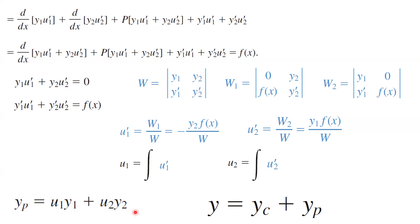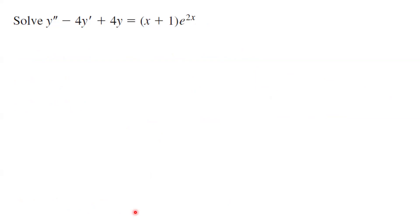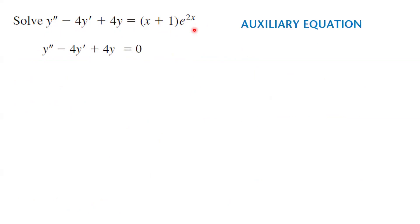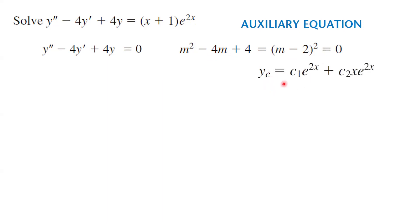So these are the steps we're going to take. Let's look at an example: the second derivative of y minus 4y prime plus 4y is equal to (x + 1)*e^(2x). Let us set the right-hand side equal to 0 and form the auxiliary equation, which is m squared minus 4m plus 4, or (m minus 2) squared. As you can see, we get a repeated real solution. So the complementary solution is c1*e^(2x) plus c2*x*e^(2x), with m equal to 2. We're going to use y1 = e^(2x) and y2 = x*e^(2x) to find u1 and u2.